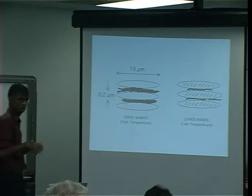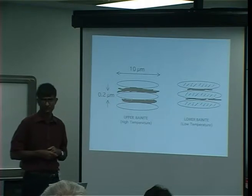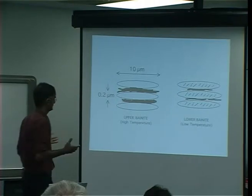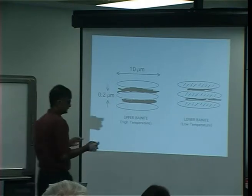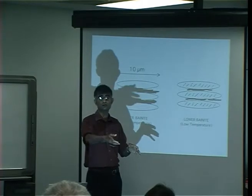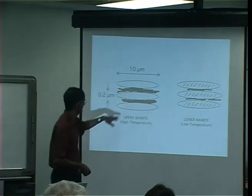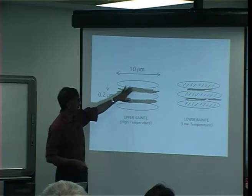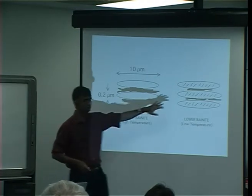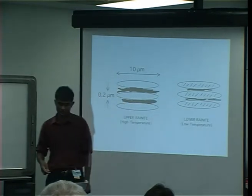These are all the peculiar features of bainite that we have to explain: why does it grow to a limited size and stop, requiring nucleation of a new plate for the transformation to continue, and why do we get this particular dispersion of carbides as a function of transformation temperature?